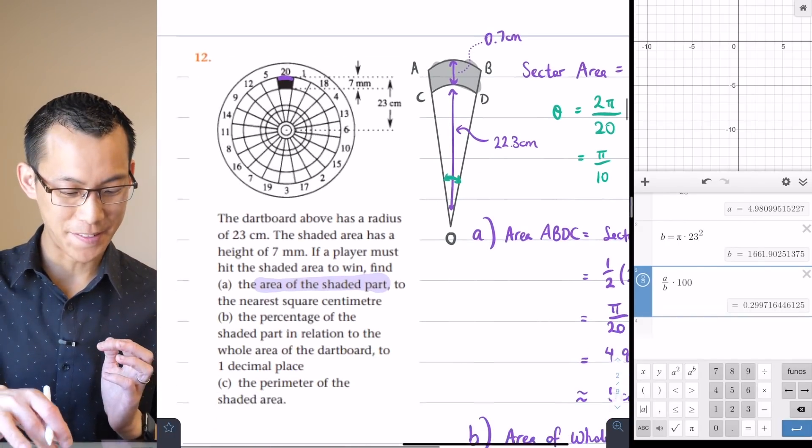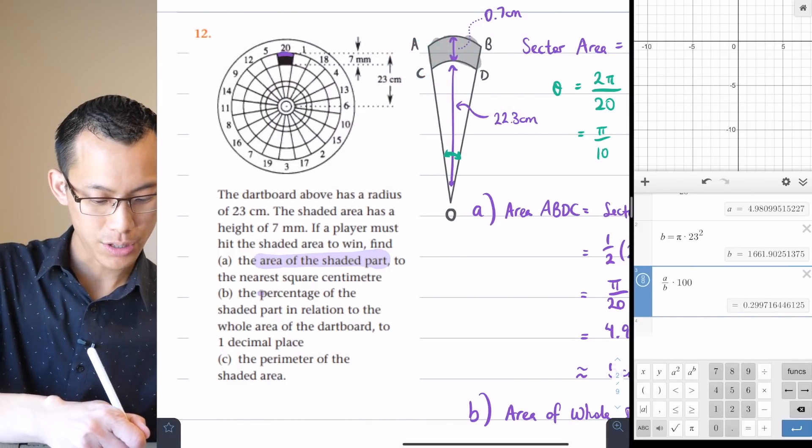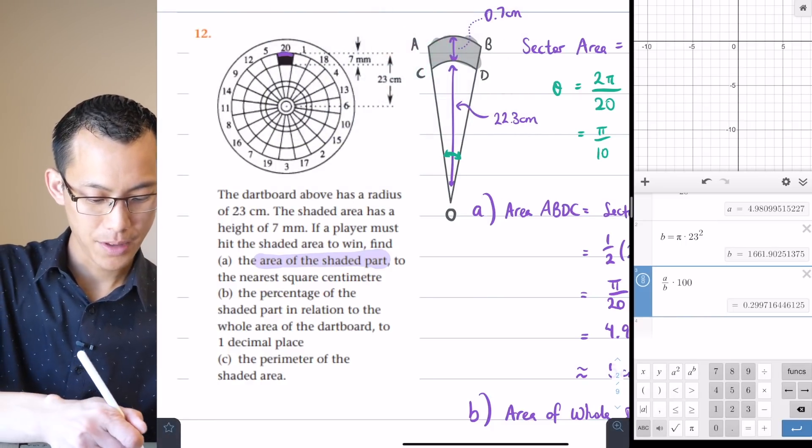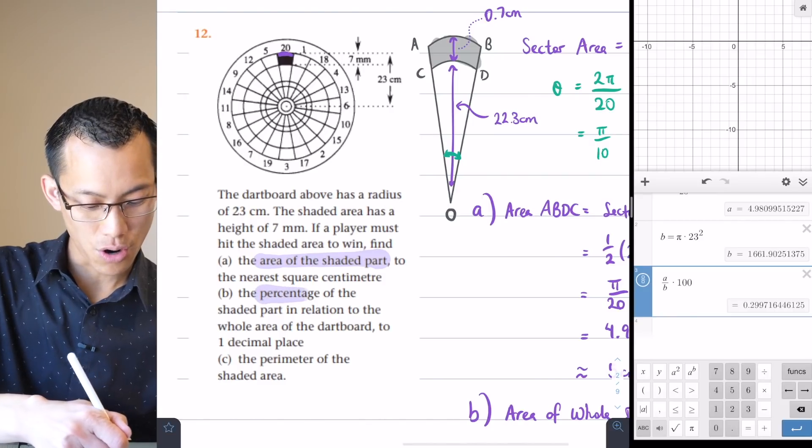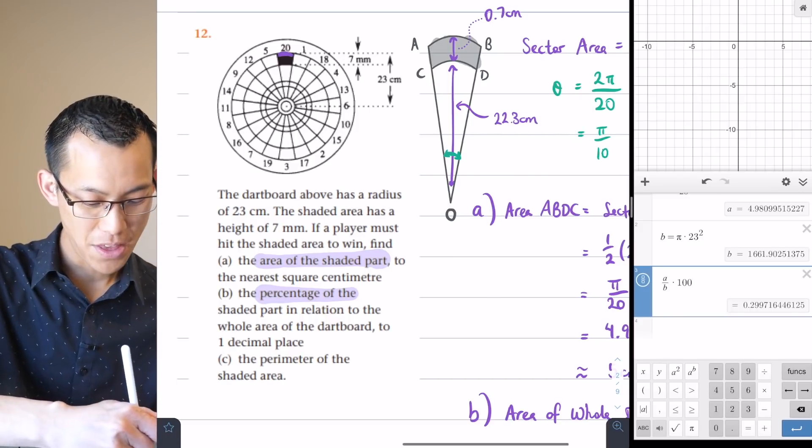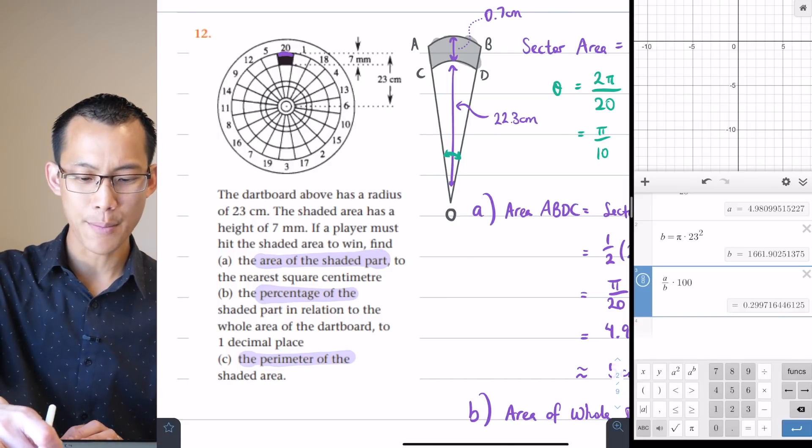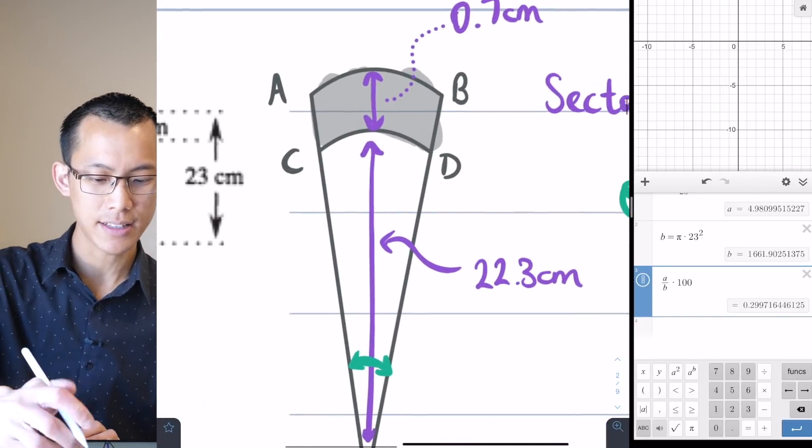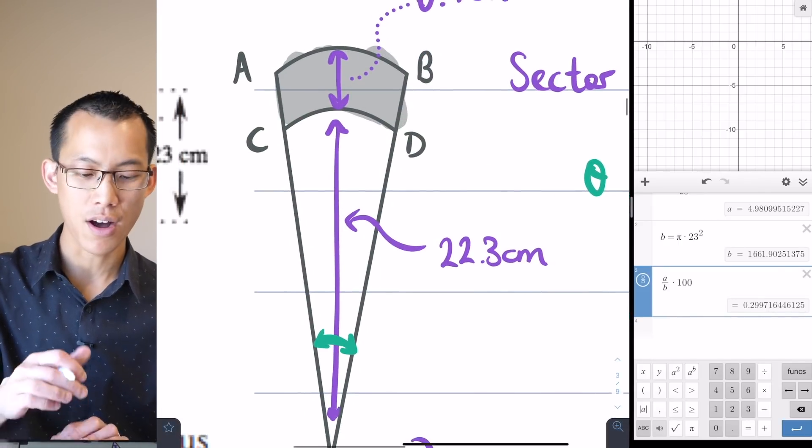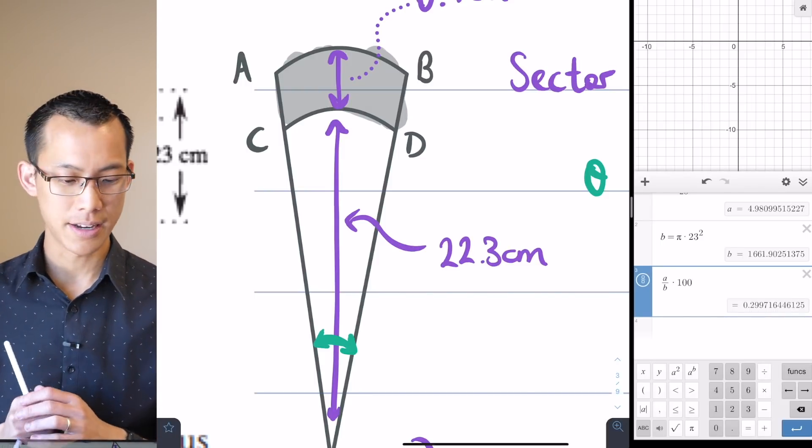Okay, so we've done A, which is the area of the shaded part. We just finished B, which is the percentage of the shaded part in relation to the whole area of the dartboard. And lastly, the perimeter of the shaded area. So I'm going to come back to my original diagram over here. It's getting a bit busy, but I think I can still use it. How do I work out the perimeter of this shaded area? Well, there's four components to it, or three, as you'll see in a second.